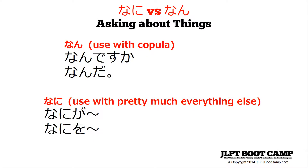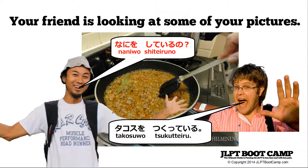Final question: your friend asks, 'nani o shiteru no?' And you answer, 'takos wo tsukuteru.' 'Nani o' — 'o' is the object-marking particle, so what kind of object? 'Shiteru no' — 'shiteru' means doing something, 'no' is the casual sentence marker. You're answering: 'takos wo tsukuteru' — you're making tacos, the '-ing' form again.